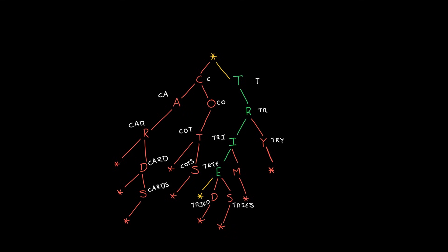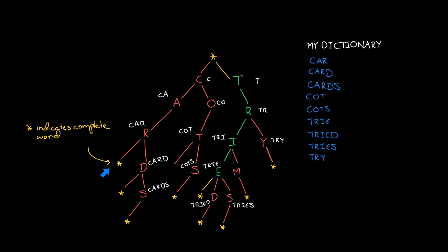For example, suppose we use this trie to store this very small version of the English language. We could use it to say, are there any words that start with C-A-R? Yes, there are. There's car, that's actually a complete word, but there's also card. So car is also a prefix, and it allows us to do very fast lookups.